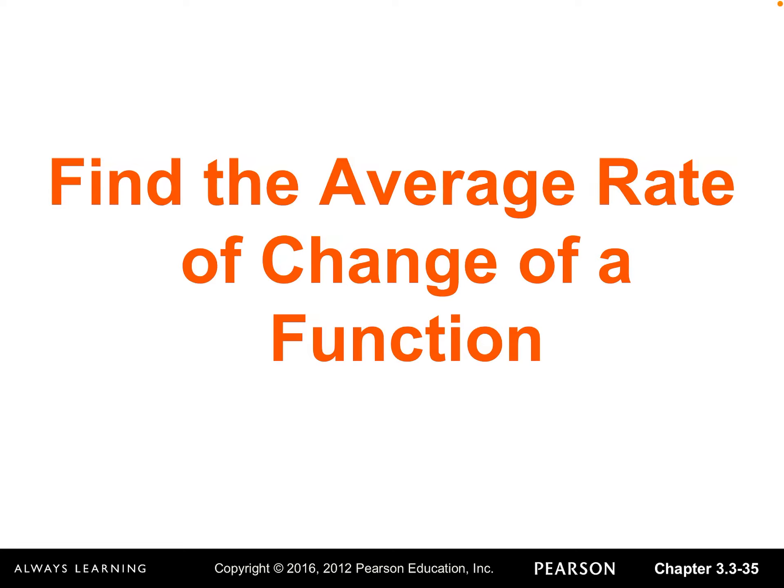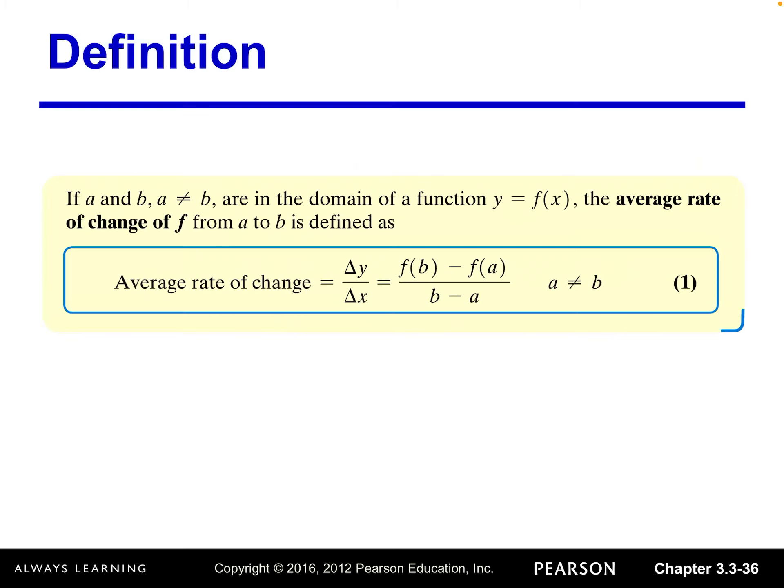The last part of section 3.3 is how to find the average rate of change of a function. Let's look at the definition first. If a and b are in the domain of a function and a and b are not equal, the average rate of change of the function from a to b is defined as: